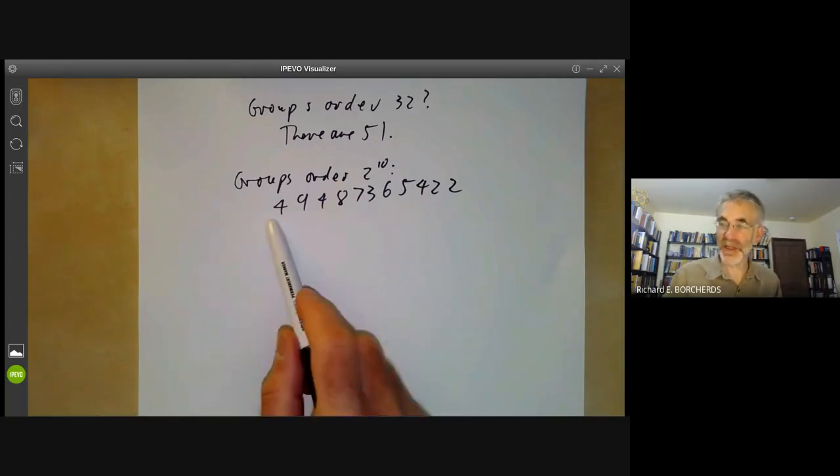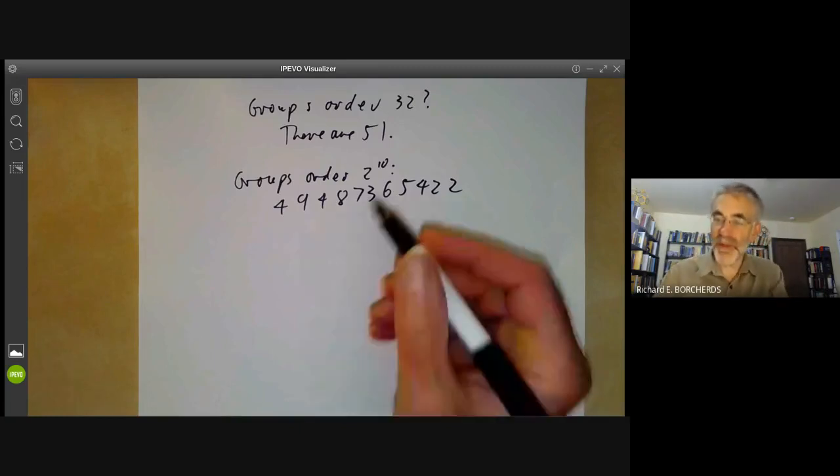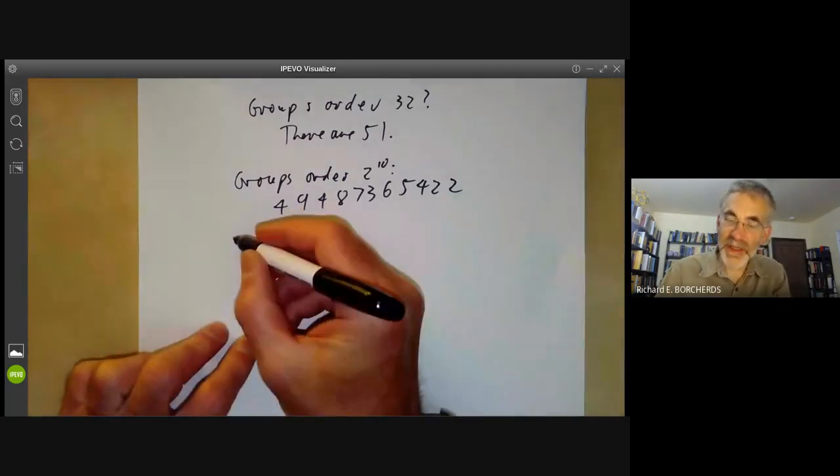So classifying groups of order 2 to the n, or for that matter groups of order p to the n for n large, is rather like trying to classify all the individual grains of sand on a beach. There are just ridiculously large numbers of them and most of them kind of look pretty similar. They're sort of rather difficult to distinguish. Many of them look much the same. So what I'm going to do this lecture is show why there are so many groups of order p to the n.